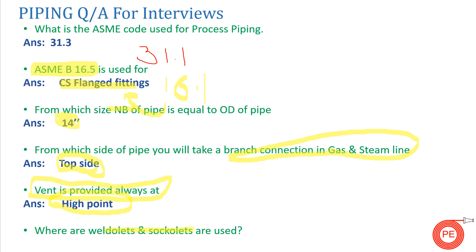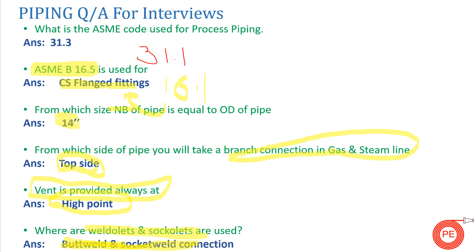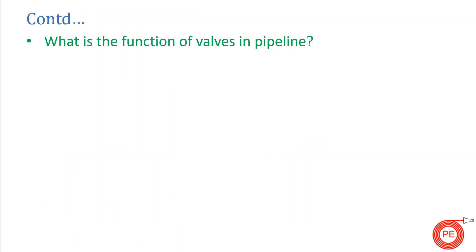What are weld outlets and socket weld outlets, and where are they used? Weld outlets and socket weld outlets are used in butt weld and socket weld connections respectively.